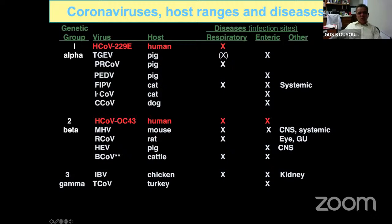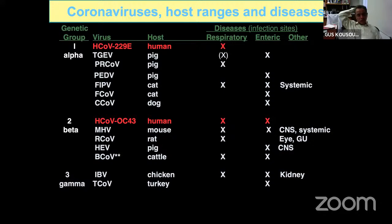We know a lot about coronaviruses from other coronaviruses affecting various species. Looking at the different groups — alpha, beta, gamma, delta — we have human coronaviruses in the alpha group, as well as transmissible gastroenterovirus, feline infectious peritonitis virus, and canine coronavirus. Under the beta group, we have the mouse hepatitis virus, which actually very accurately depicts the symptoms and disease patterns of human SARS-CoV-2 in mice and is a nice model for studying immunopathology.